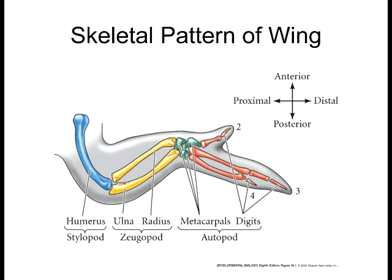There are three main sections of any limb in a vertebrate: the stylopod, the zugopod, and the autopod. Those are the general terms for any limb, whether it's the forelimb or the hindlimb, whether it's a wing for a chicken or legs for a mouse or the arms for a human. We're going to spend most of our time talking about humans. So this is an illustration of the forelimb — we have here the humerus, which is the first bone or first section, that's the stylopod. In our legs, it's the femur.